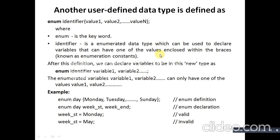Another user-defined data type is enum. The syntax is: enum identifier { value1, value2, ... valueN }; where enum is the keyword and identifier is the enumerated data type that can be used to declare a variable. That variable can have one of the values enclosed within the braces. These values are called enumeration constants. The value remains fixed within the identifier.